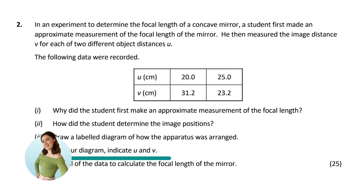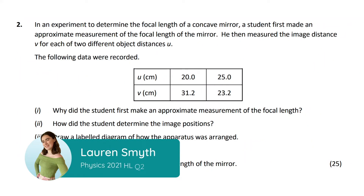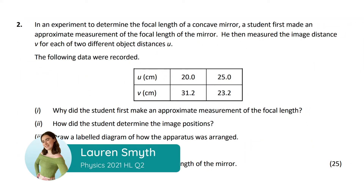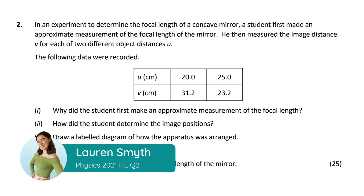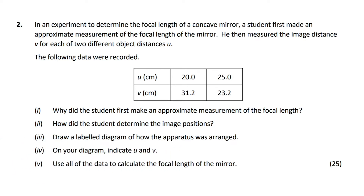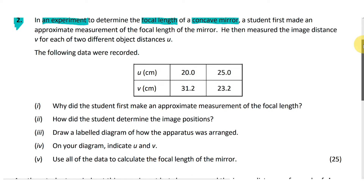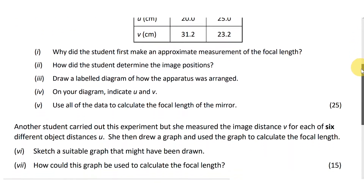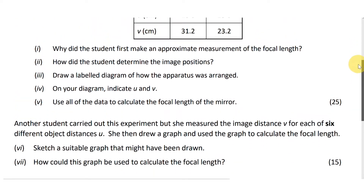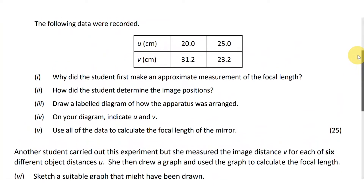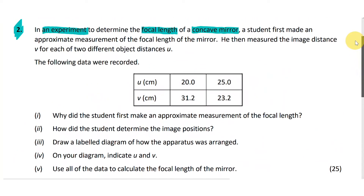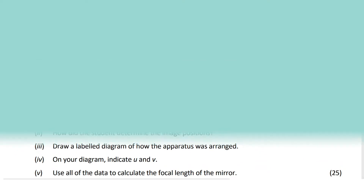Hello and welcome everyone to today's video. This is Lauren from StudyClicks and today we will be looking at 2021's higher level question 2, which focuses on an experiment to determine the focal length of a concave mirror. This question is worth 40 marks in total and will approximately take you 20 minutes in the exam. Let's begin.